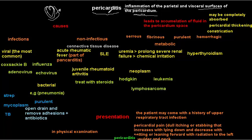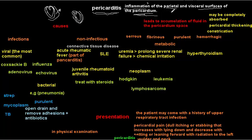This video is about pericarditis. Pericarditis is the inflammation of the parietal and visceral surfaces of the pericardium. The heart is surrounded by parietal and visceral pericardium — the visceral pericardium directly surrounds the heart, and the parietal comes after that. Between them we have the pericardial fluid. Inflammation of the parietal and visceral surfaces of the pericardium leads to pericarditis; 'itis' means inflammation, and 'pericardium' is the lining of the heart.